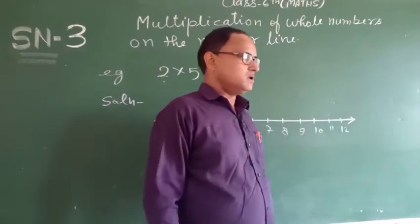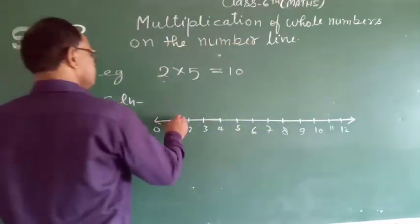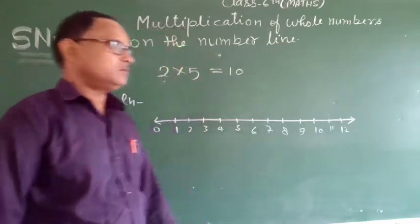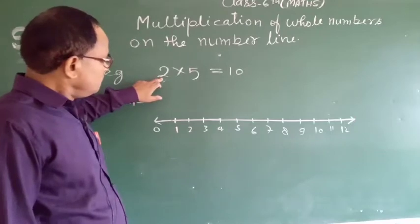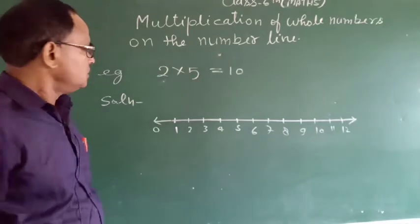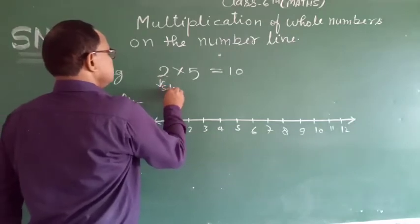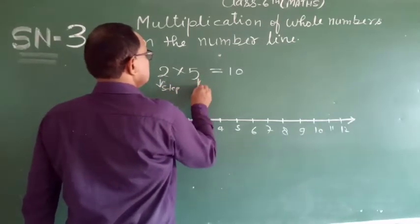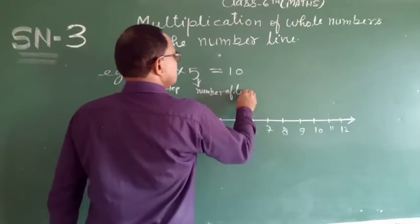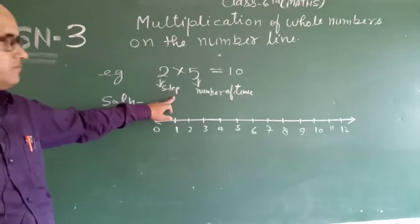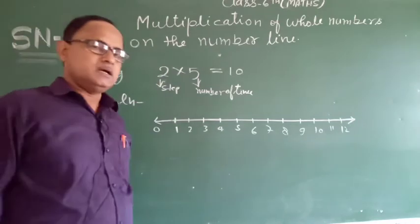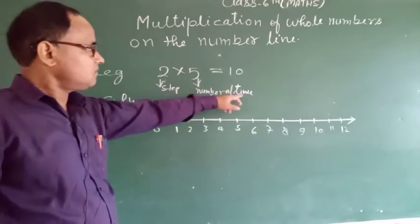For 2 into 5 on the number line, here 2 is the step and 5 is the number of times. We move toward the right side this number of times — 2 is the step and 5 is the number of times we move toward the right side.